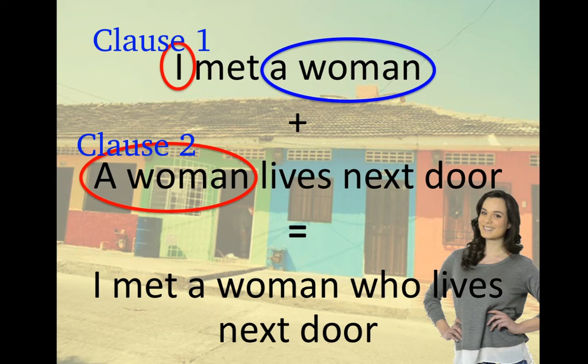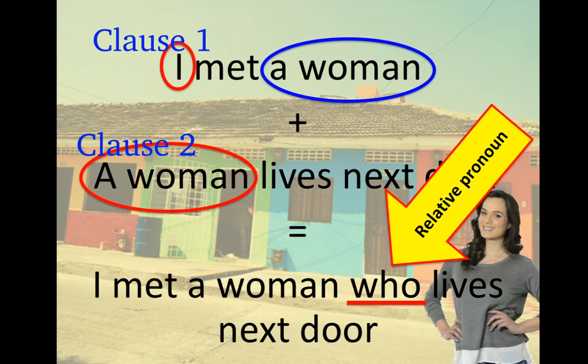I used 'who' to replace the object of the verb in the first clause and the subject of the verb in the second clause. 'Who' — replacing 'a woman' — is the relative pronoun. The woman is the noun that the two clauses have in common.